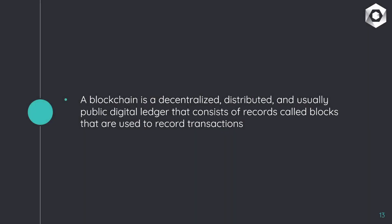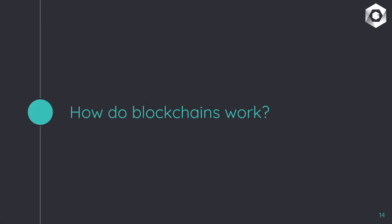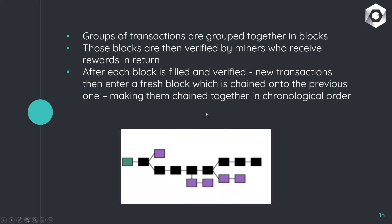Blockchain versus DAG: what is a blockchain? A blockchain in simple terms is a decentralized, distributed, and usually public digital ledger that consists of records called blocks, used to record transactions. Groups of transactions are grouped together in these blocks, then verified by miners who receive rewards in return for their efforts. After each block is filled and verified, new transactions enter a fresh block which is chained onto the previous one, keeping everything in chronological order.